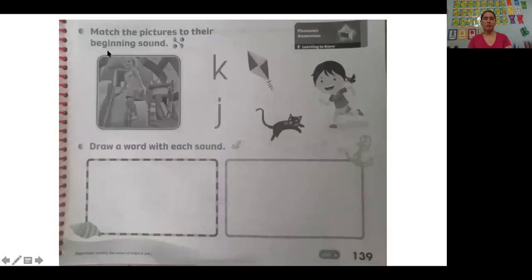Match the pictures to their beginning sound. Okay, here the little girl is jumping, she is jogging, goes with the letter J. And kitten, K and kitten, so you're gonna trace a line here, a line here, and a line goes here, and a line goes here. Aquí ustedes me van a trazar o unir una línea con cada imagen. Aquí ella está saltando va con la letra J, corriendo va con la letra J, y K y kitten con la letra K.